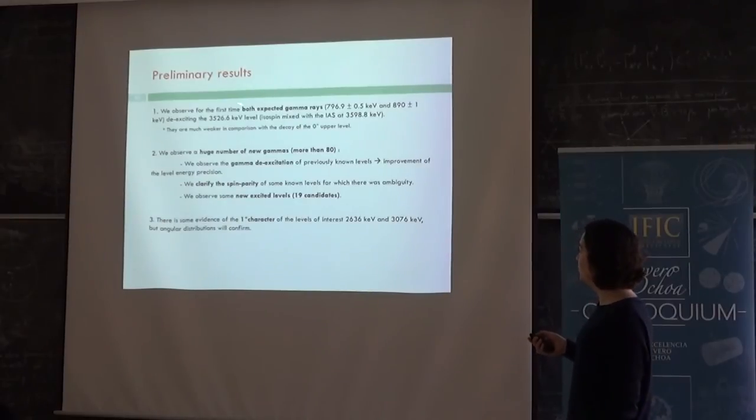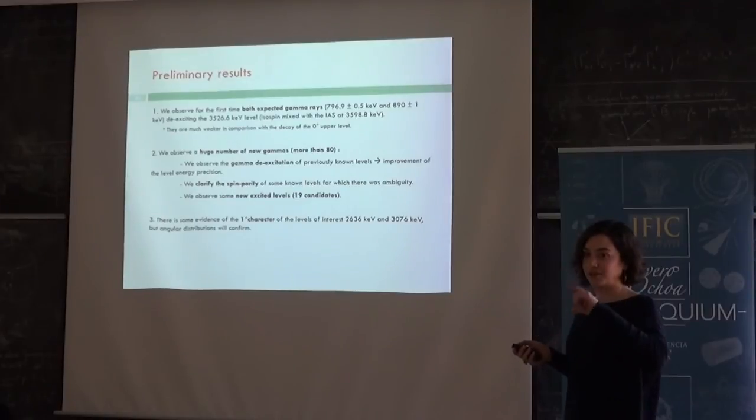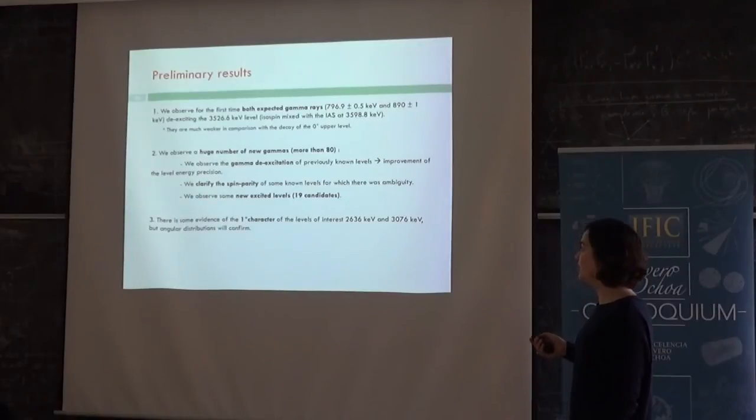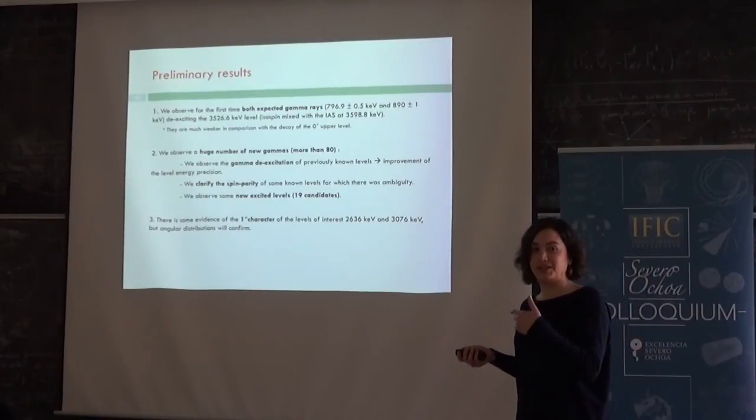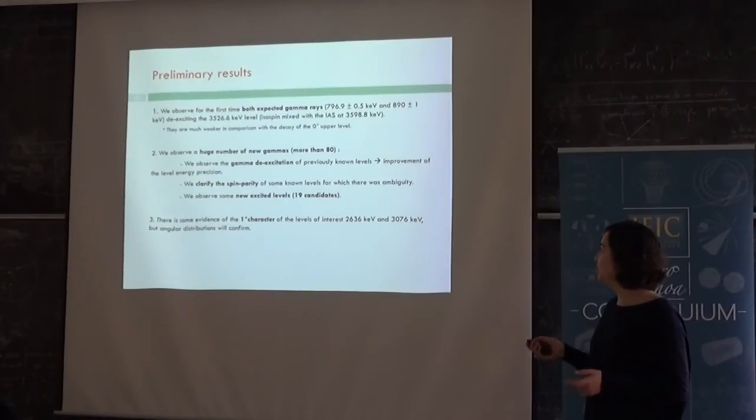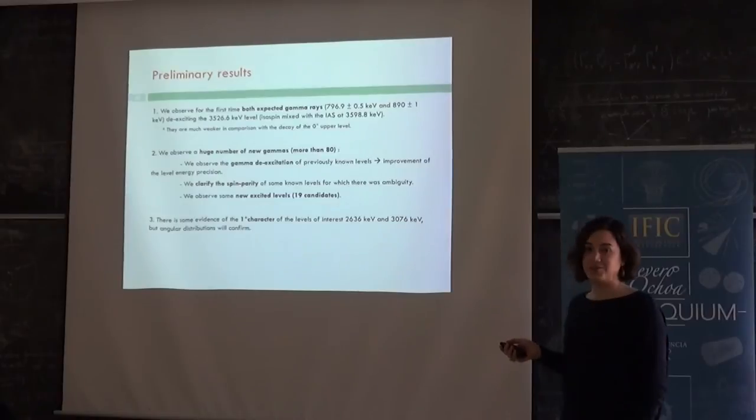So far, we have observed both respectively gamma, those energies that confirm the excitation of the isospin mixed level, even if they are much weaker in comparison with the other level. Then we have observed a huge number of new gammas, more than 80, even if it was supposed that the nucleus was quite, it was quite well known. But so far, they are around, more than 80 new gammas, which is a lot. And then we observed also the gamma de-excitation of previously known levels. So this means that we can improve the energy precision of those levels. We also clarified the spin parity of some previous known levels, but for which there was ambiguity for the spin parity. And then we have seen also new exciting levels around 20.